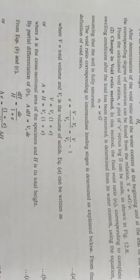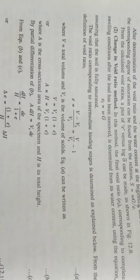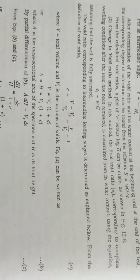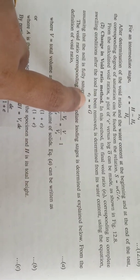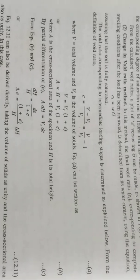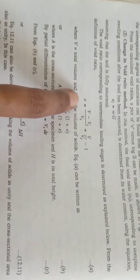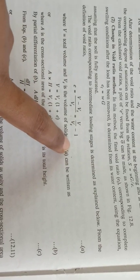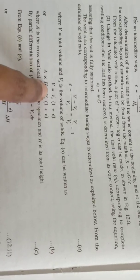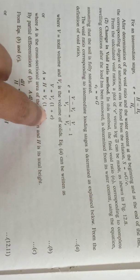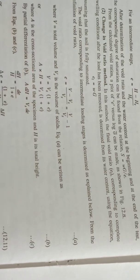We will use the saturation equation S = G × W for this soil sample. The void ratio equation is e = V / Vs, and total volume V is equal to Vs × (1 + e), which we will use throughout this derivation.